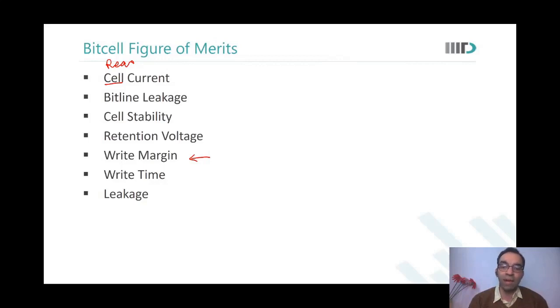How high above zero can it be that I will be able to write into the memory cell - that is what is called as write margin. Write time is intuitive - the name itself suggests how long it takes to write into the memory cell. We just saw that write 1 happens slower than write 0 in a 6T memory cell with NMOS pass gates.